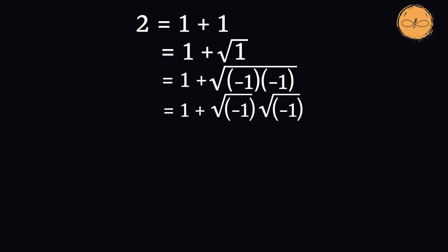We now take the square root of each term. The square root of negative 1 is equal to the imaginary number i. We have i times i, which equals i squared, and i squared is equal to negative 1. In the end, 1 plus negative 1 equals 0, so here we have proved 2 equals 0.